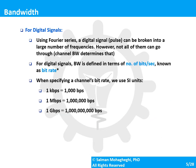For digital signals, bandwidth is mainly defined in bit rate — the number of bits that can be sent through a channel per second. Typical units are kilobit per second, megabit per second, or gigabit per second, corresponding to one thousand, one million, or one billion bits per second.